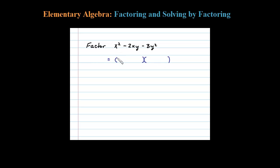First term first: x squared breaks up as x times x. Last term second: 3 is prime, so 3y squared factors as y times 3y. Y times 3y is 3y squared. Now let's worry about the signs.